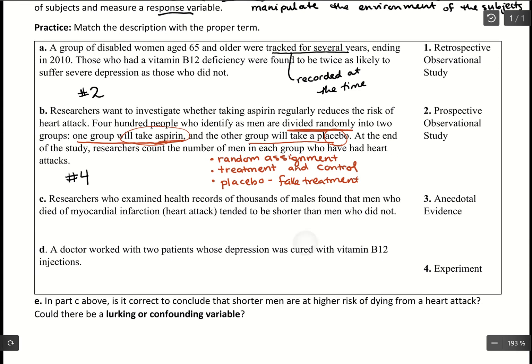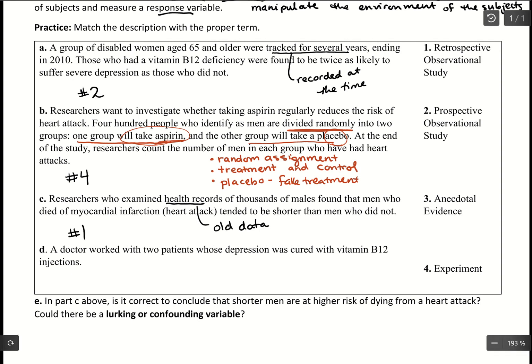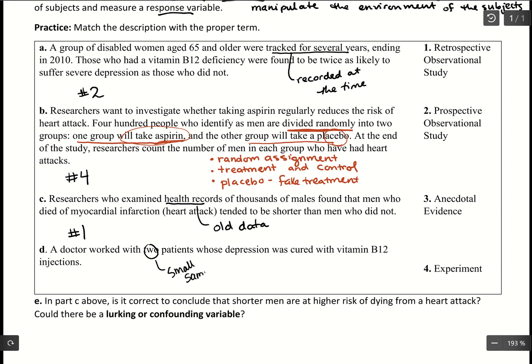In example C, researchers examined health records — old data they're reading through to find information. Since they're not actually recording the information themselves but reading old records, that makes it a retrospective observational study. In example D, a doctor worked with two patients whose depression was cured with vitamin B12 injections. That small sample size makes it anecdotal evidence — it's great that it worked for those two patients, but we want a much larger study before making broader claims.